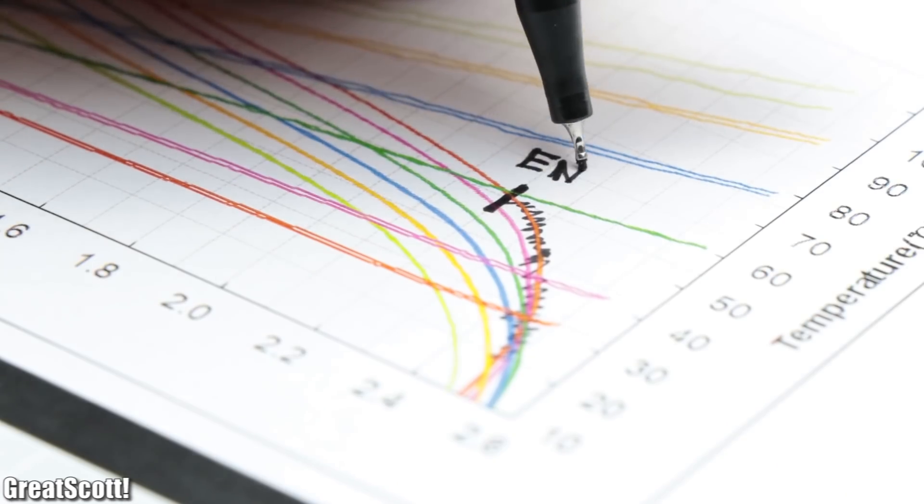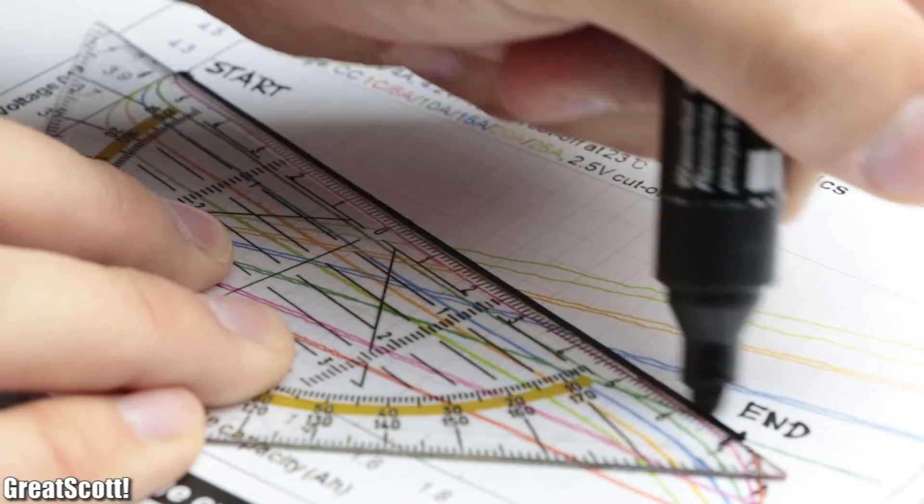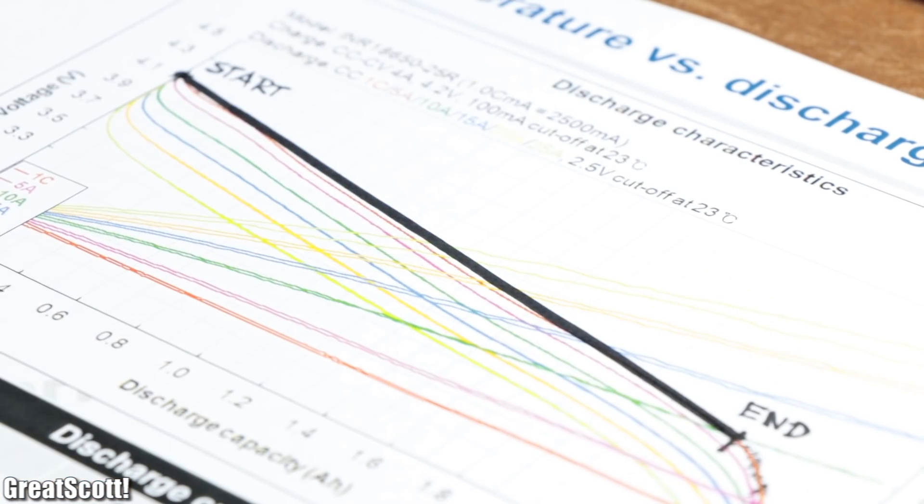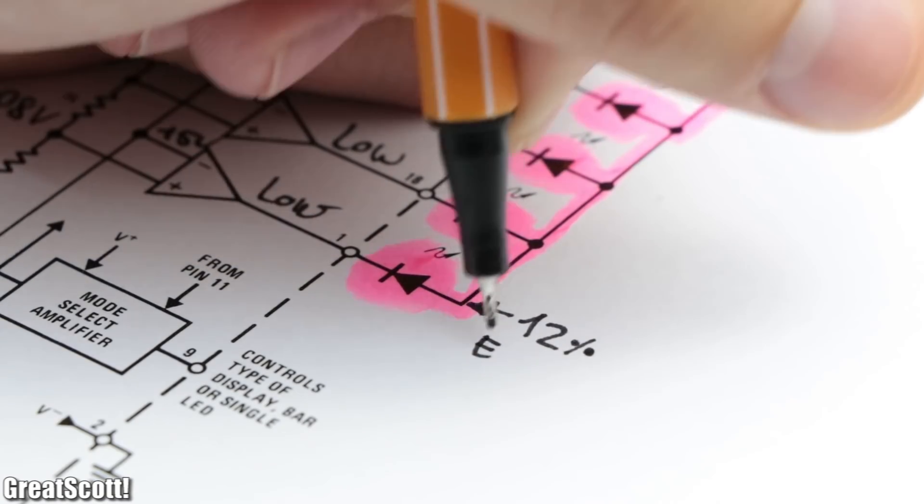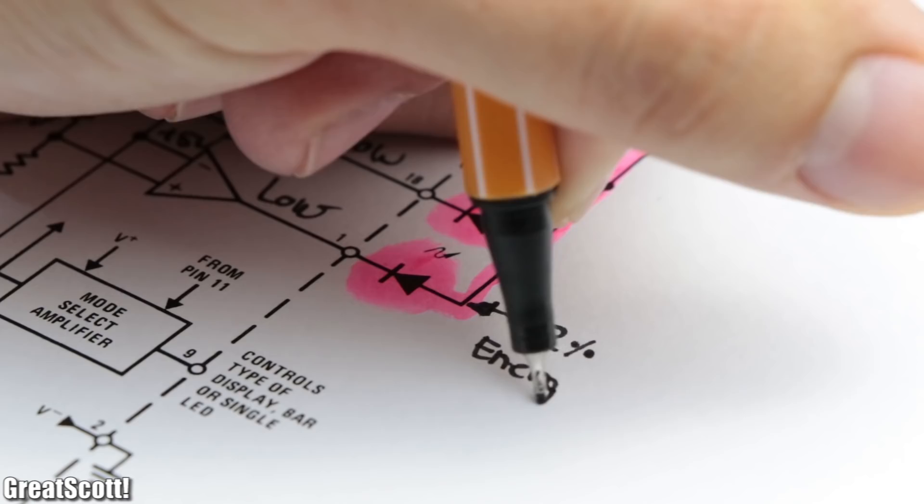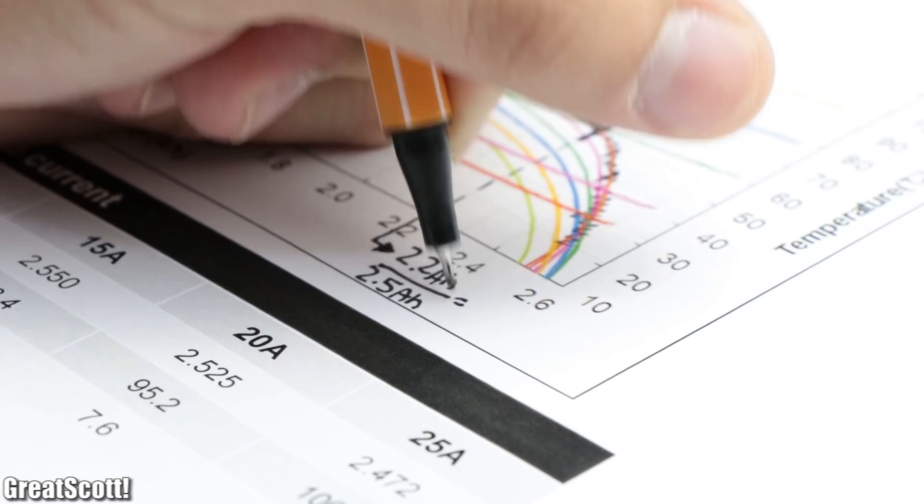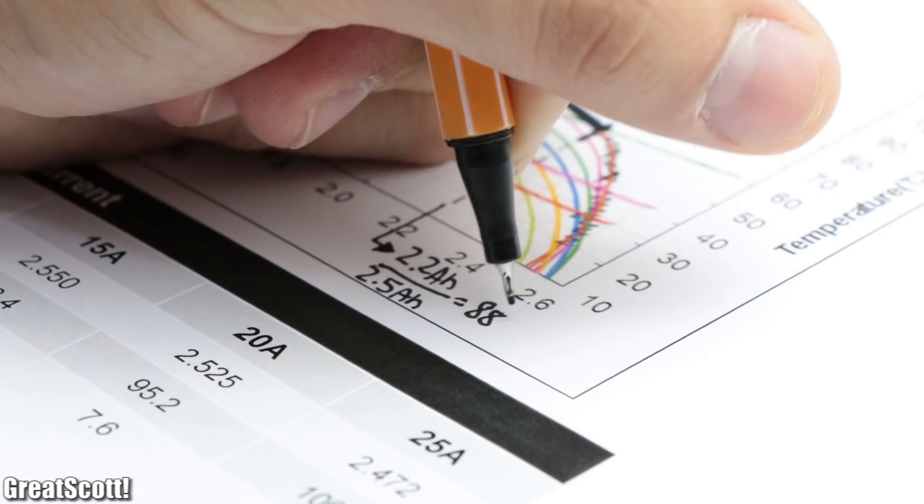One solution for that is to decrease the voltage window so that we look at the mostly linear section of the discharge curve. And while we're at it, we should also set the last LED to 12% energy, which the capacity of 2.2 amp hours represents.